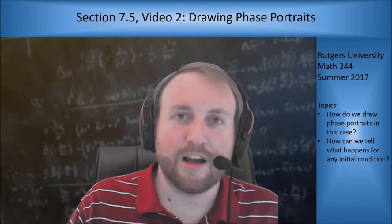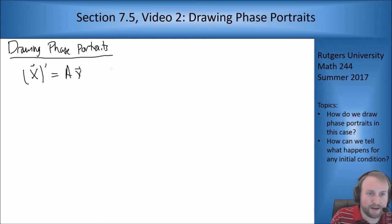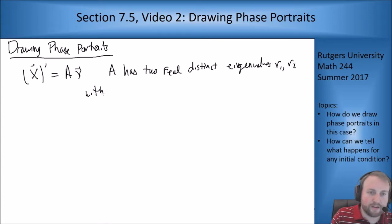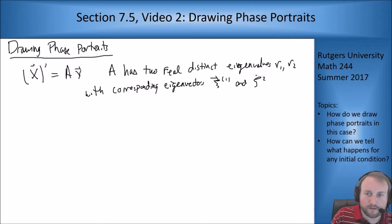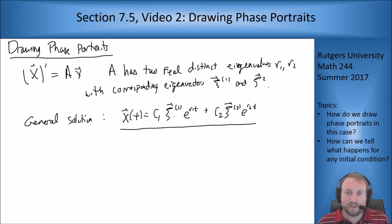So how do we draw these phase portraits? We're assuming we have an ODE of this form: x′ = Ax, where A has two real distinct eigenvalues r₁ and r₂ with corresponding eigenvectors ξ₁ and ξ₂. In the last video we did all the work to show that in this case we know the general solution — it's that formula right there. Now we want to draw a picture that explains what's happening to all these solutions as time goes on, using the general solution as our starting point.